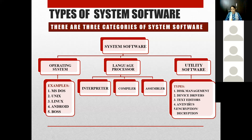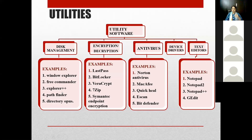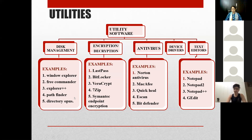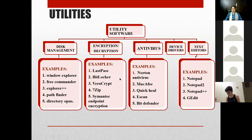Utility software is software which performs the housekeeping tasks of your computer, like disk management, device drivers, text editors, antivirus, and encryption and decryption softwares. Various examples of disk management include Windows Explorer, Free Commander, Explorer++, and PathFinder. Encryption decryption softwares include LastPass, BitLocker, 7-Zip, and Symantec Endpoint Encryption.